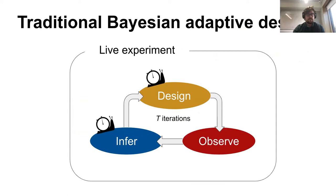Where this gets particularly exciting is when we're not just asking one question but a series of questions. It's really exciting when we can be adaptive — using information gained from previous iterations to update things and learn as we go. We might have a cyclic process with a Bayesian model. As we get more data, we update that model, use it to choose new designs for the next iteration, run the experiment, and keep going. As we learn about each participant, we ask questions that are informative specifically to them.